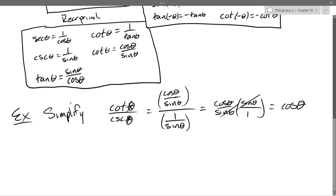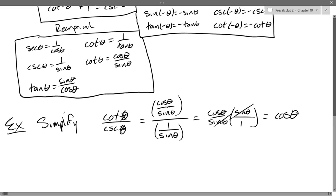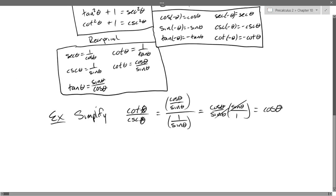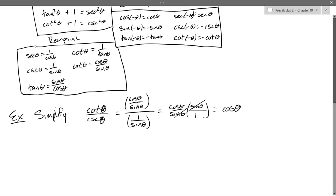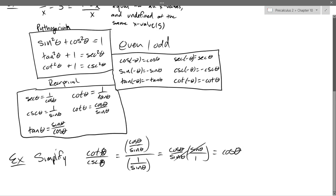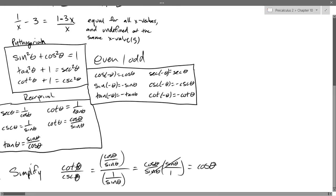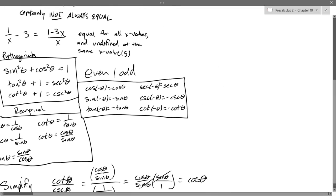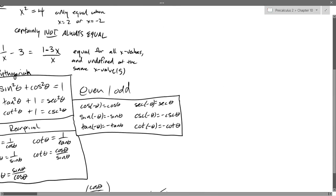Let's write down strategies first and then we'll start applying them. Normally I would write strategies on a separate board so we always have access to them. I'm going to write all the strategies up here with all the things you need to memorize. So we'll have another box — this will be all of our strategies.